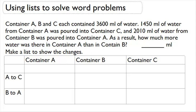and 2,010 mL of water from container B was poured into container A. As a result, how much more water was there in container A than in container B. We're going to use a list from this chart that we have in front of us to show the changes. So to start, we're going to say that each container, A, B, and C, had 3,600 mL of water. So we're going to start off by just saying at the beginning they all had the same amount.